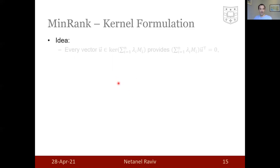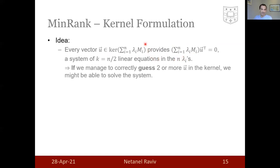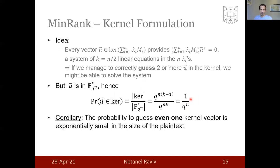In its first formulation, the idea is that any vector in the target matrix gives rise to this system of linear equations, linear in the lambda_i's. Since there are k which is n over 2 linear equations here and n lambda_i's, if we manage to guess two or more such U's, we get the system with the potential to pin down the exact solution, lambda_i. However, this is not feasible. The kernel here, I remind you, is over the extension field. Therefore, if you choose U at random, the probability that this U is in the kernel is exponentially small in the size of the extension field. Therefore, it is unlikely that this guess will work even if you only want to find one and nevertheless if you need to find two.